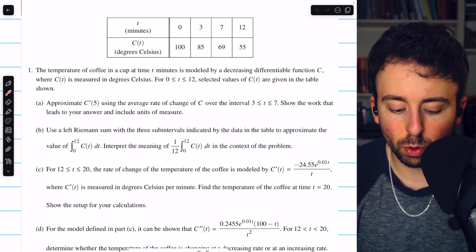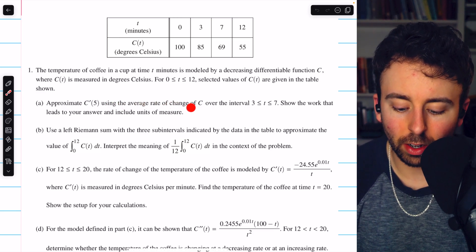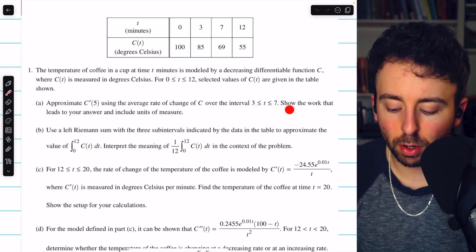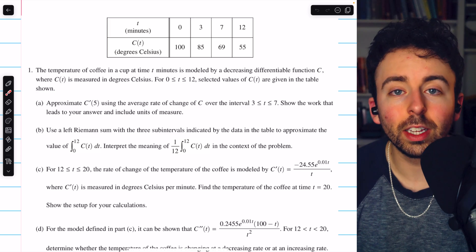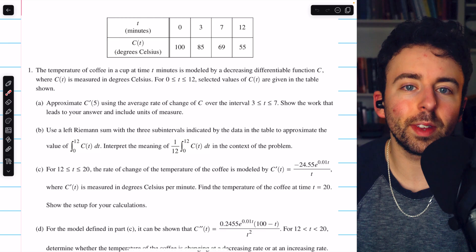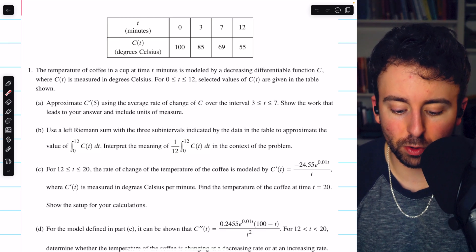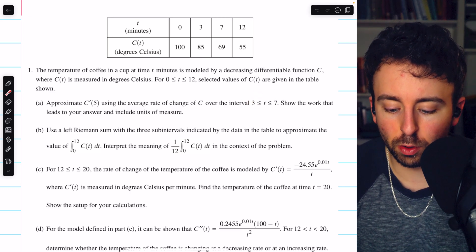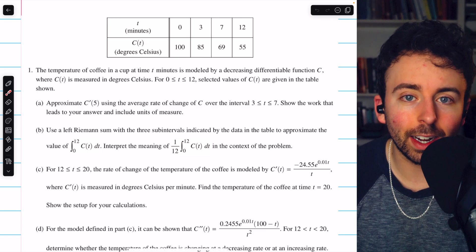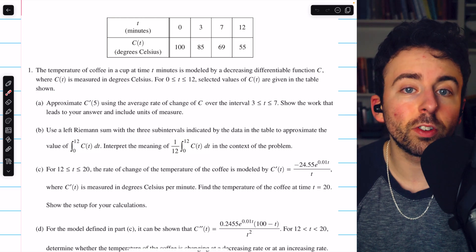Part A asks us to approximate c prime of 5 using the average rate of change of c over the interval between 3 and 7. We must also show the work that leads to our answer and include units of measure. So c prime of 5 is a derivative, which we think of as an instantaneous rate of change. We can approximate it with an average rate of change over this interval from 3 to 7. That's just the slope of a secant line. So we'll calculate the change in the temperature and divide by the change in time.